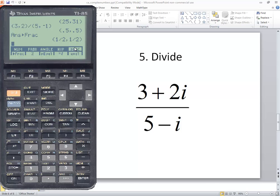And that'll change that 0.5 and 0.5 to fraction form. So our answer is 0.5 plus 0.5 i. To get rid of these menus, I just press exit one time to get rid of the first menu, one more time to get rid of the second.